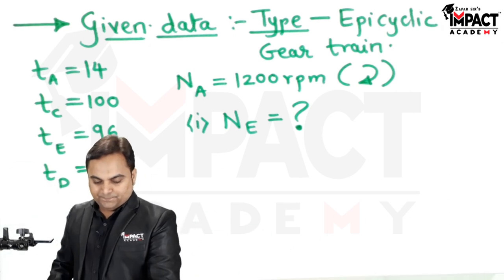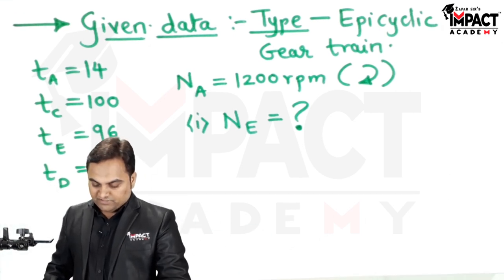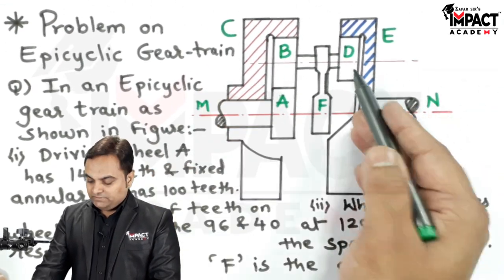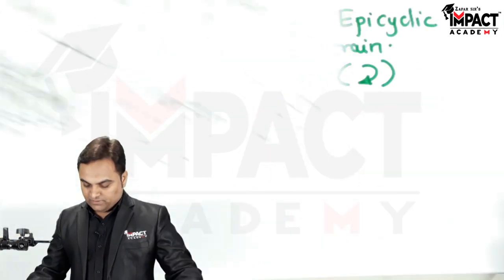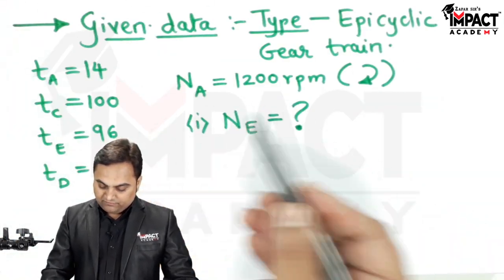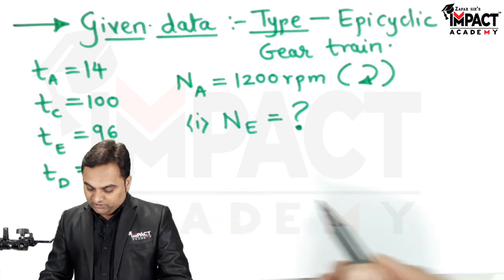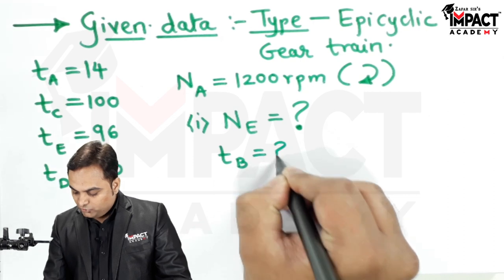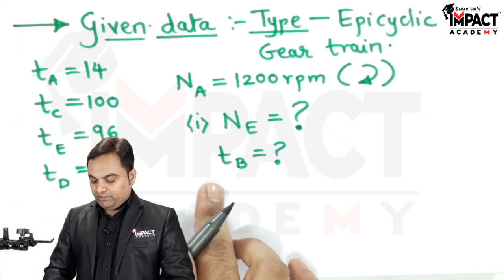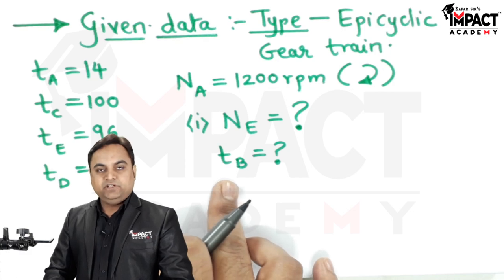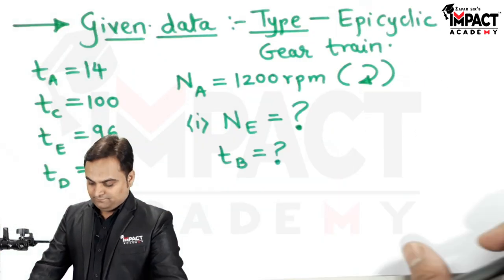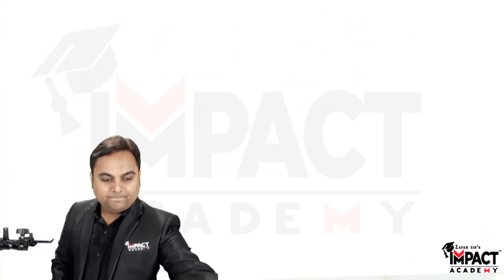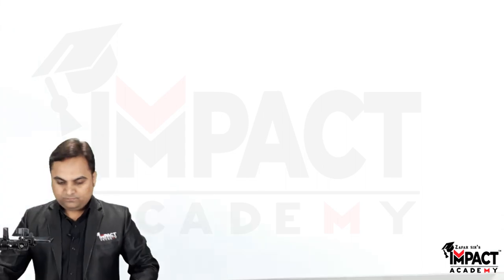When we look at the question and the diagram, we have gears A, B, C, D, and E. Out of them, the number of teeth is given for four gears, meaning the number of teeth for gear B is unknown. So first I would be going for the calculation of number of teeth on gear B using the concept of geometry.